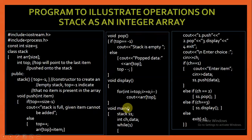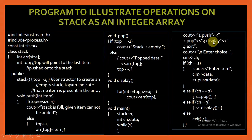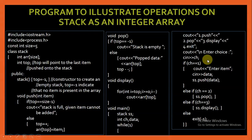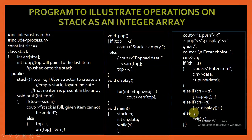In main, I create an object of class stack, s1. I use a while(1) loop and display the choices to the user: 1 for push, 2 for pop, 3 for display, and 4 for exit. I ask the user to enter the choice in variable ch. If ch is 1, I ask the user to input the item and then call the push function using object s1. If the choice is 2, I call the pop function. If 3, the display function is called. Otherwise, the exit function is called and the program exits.